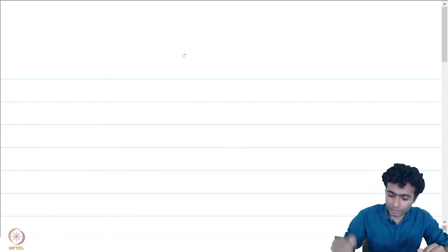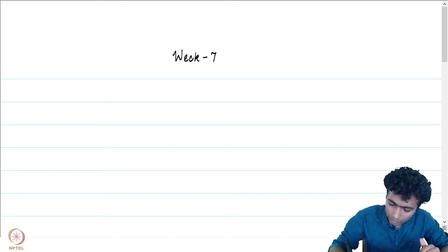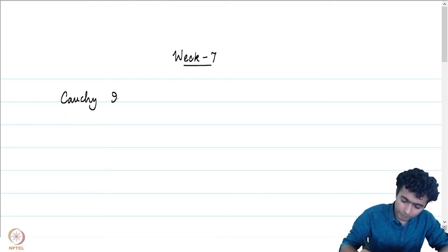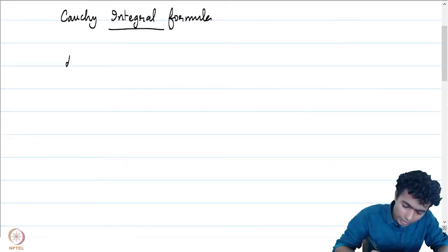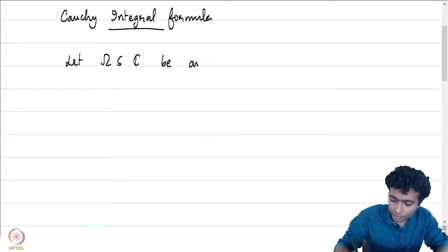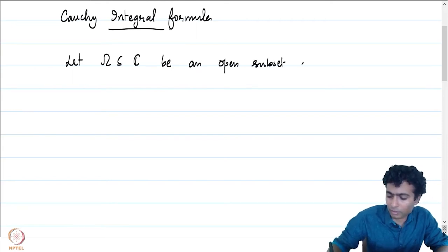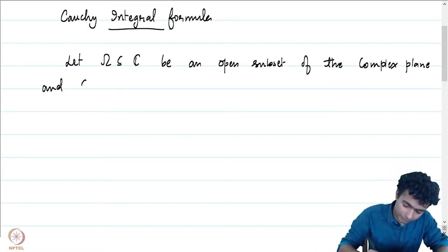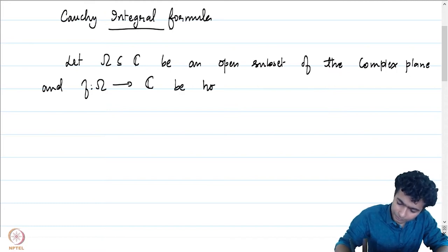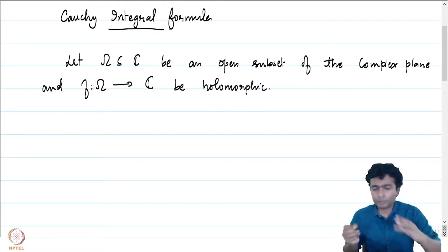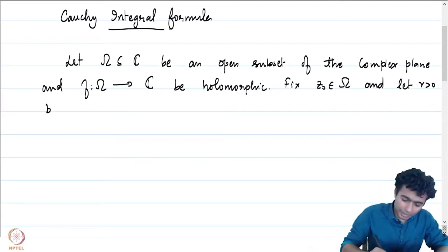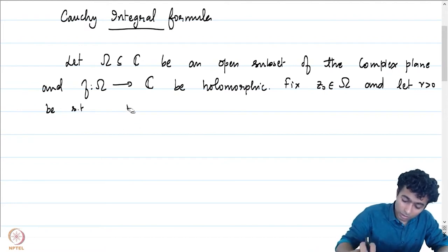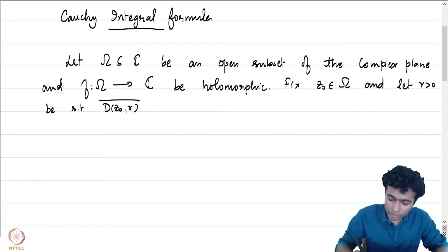Let me first write down the statement and we will discuss more. The Cauchy integral formula. Let omega be an open subset of the complex plane and let f be a function holomorphic on omega. Fix a point z naught in omega and let r positive be such that the disc — the closure of the disc of radius r around z naught — is contained in omega.